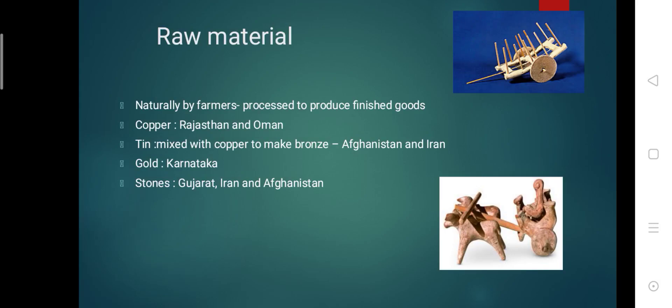Hello students. As yesterday we had a discussion about new craft in the city and life in the city, today we will continue the same chapter and talk about the raw materials — from which places raw materials were found and which kind of raw materials were used for their work. Raw materials are substances which are either found naturally or produced by farmers or herders, and these are then processed to produce finished goods.